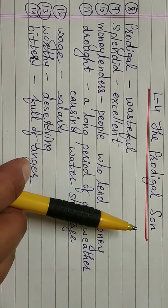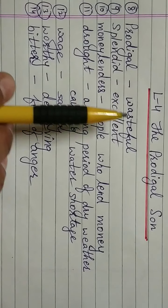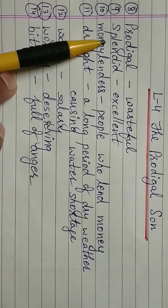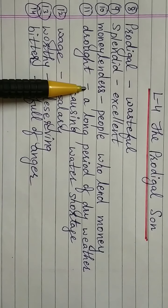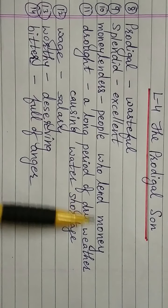Now lesson number 4, The Prodigal Son. Prodigal means wasteful. Splendid means excellent. Money lenders are people who lend money.